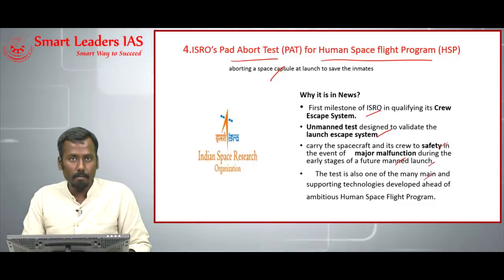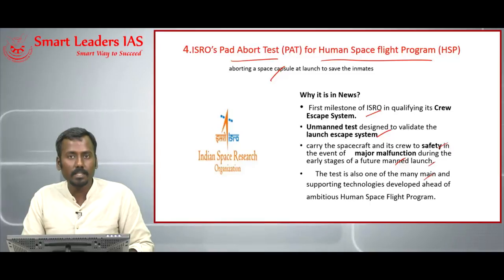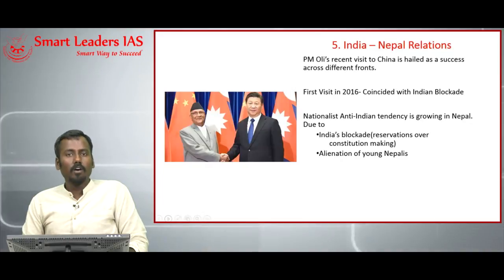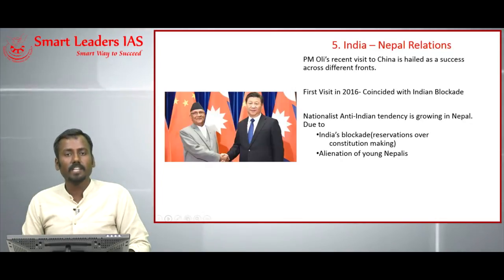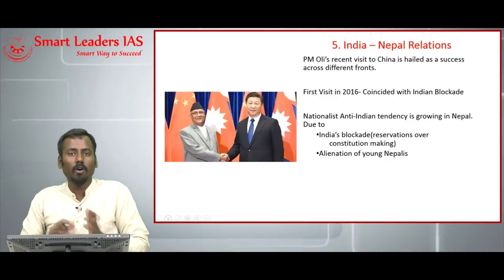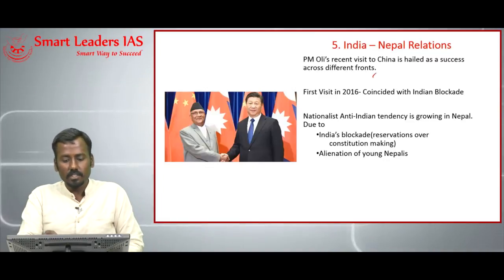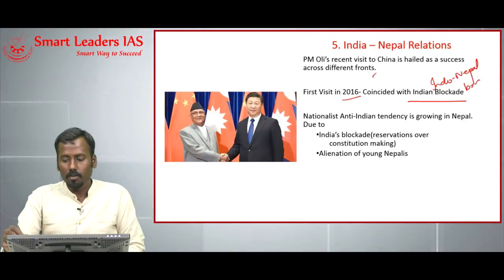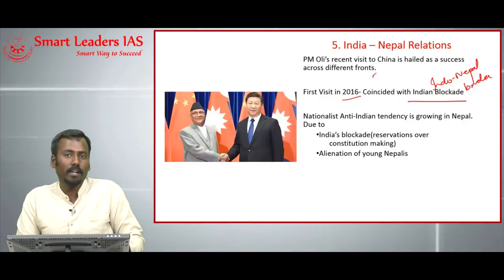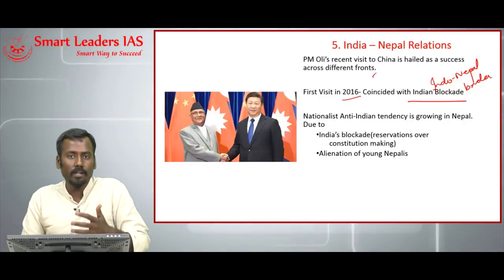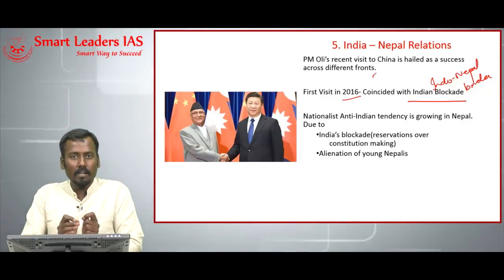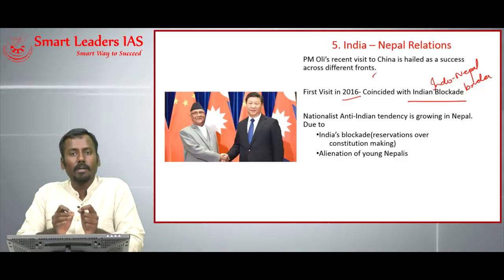The next topic is about India-Nepal relations. Prime Minister Oli of Nepal recently visited China for the second time, and his visit has been hailed as a success. He first visited China in 2016, which coincided with the Indian blockade along the Indo-Nepal border. Because of this, fuel and other raw materials supplied from India to Nepal were obstructed, and Nepali people suffered greatly, marking an epoch in the shift of Nepal from India toward China.